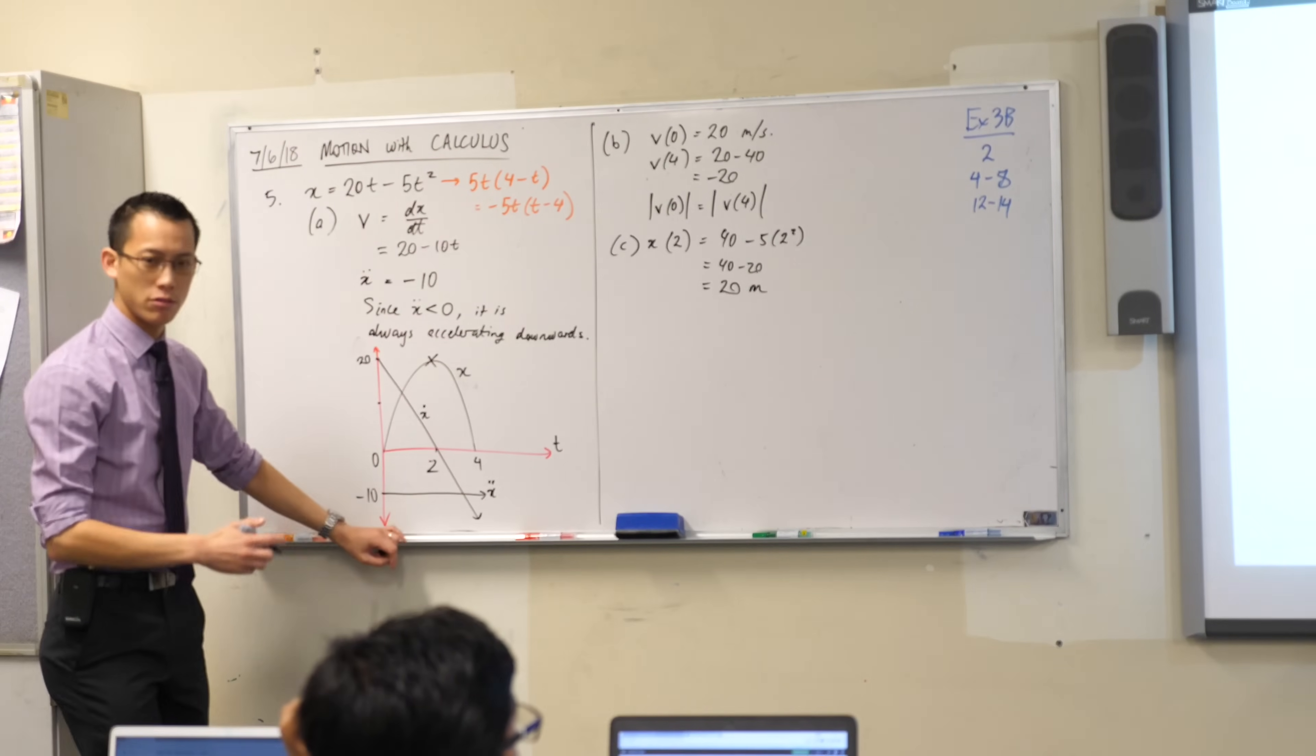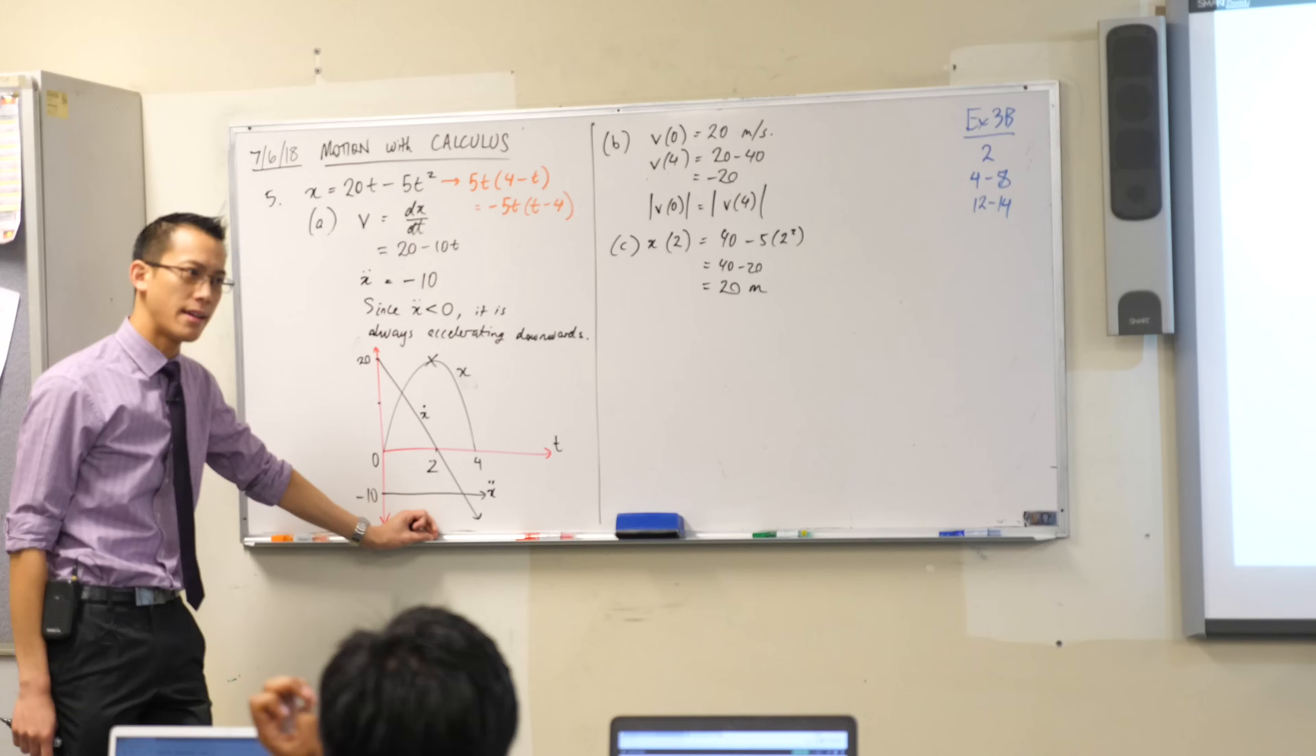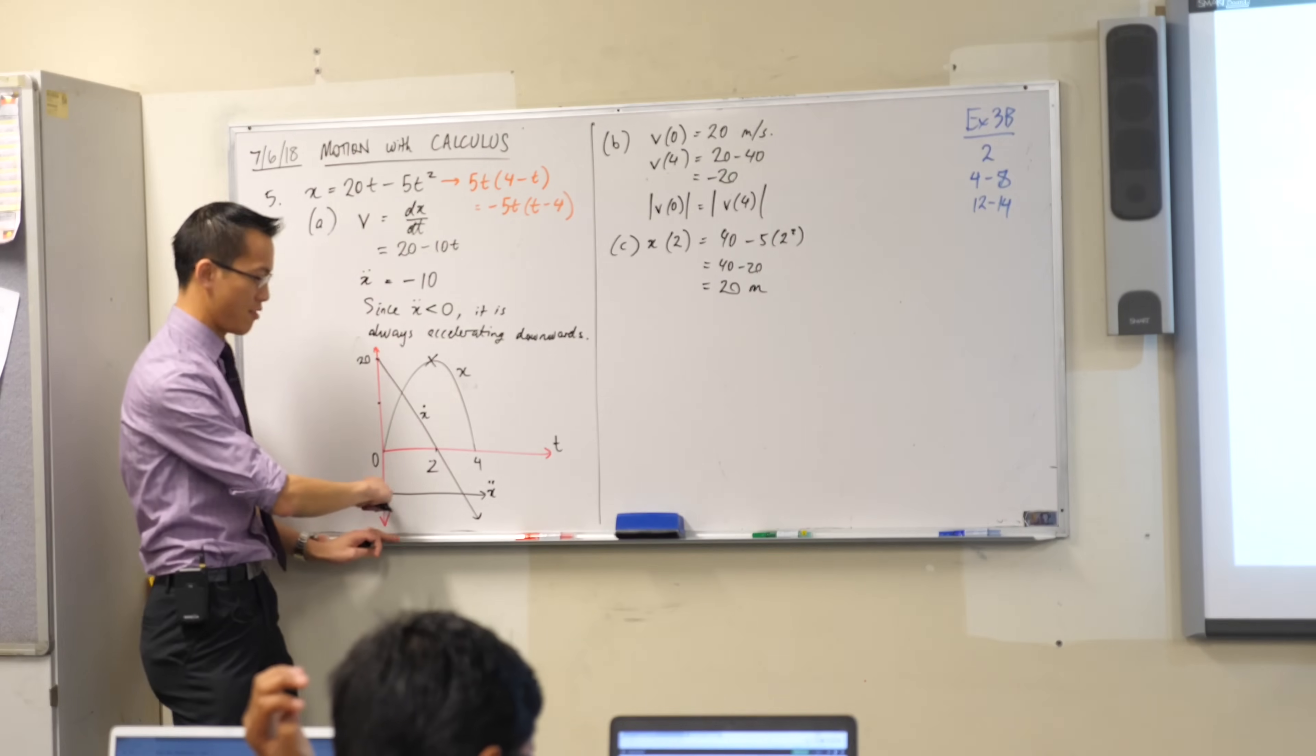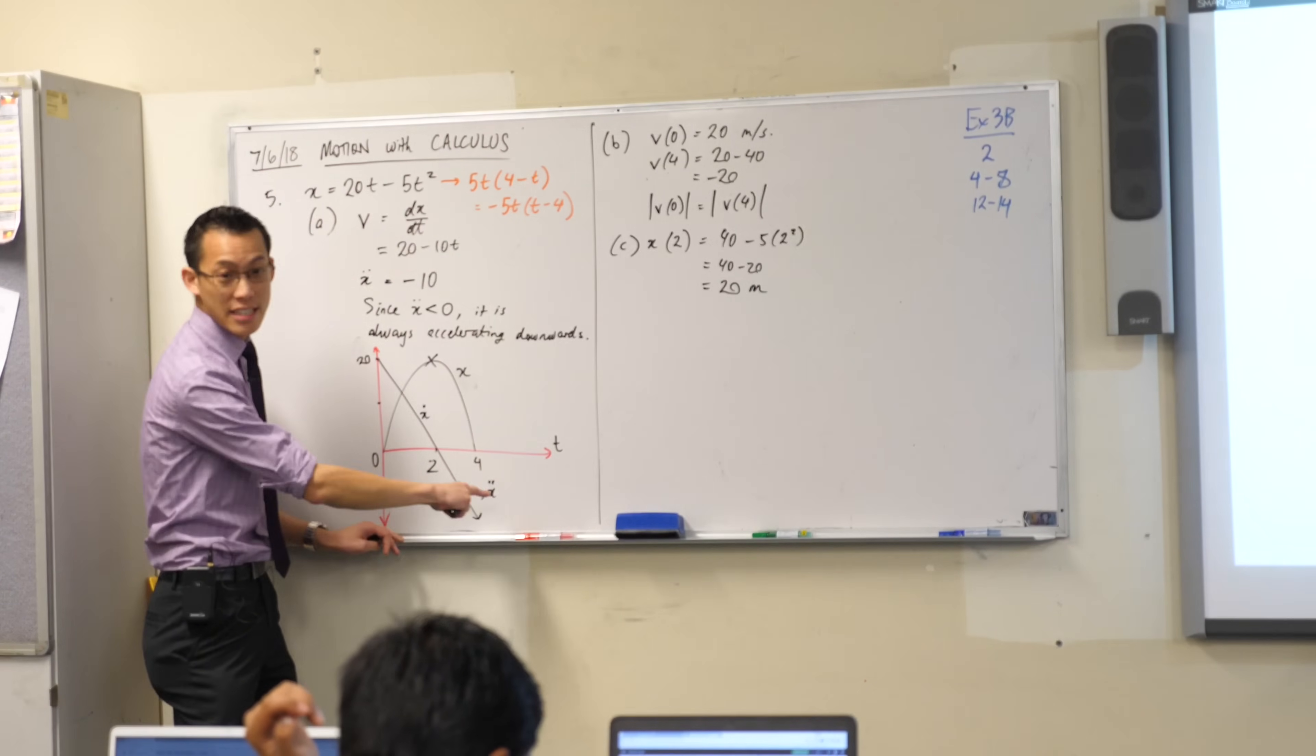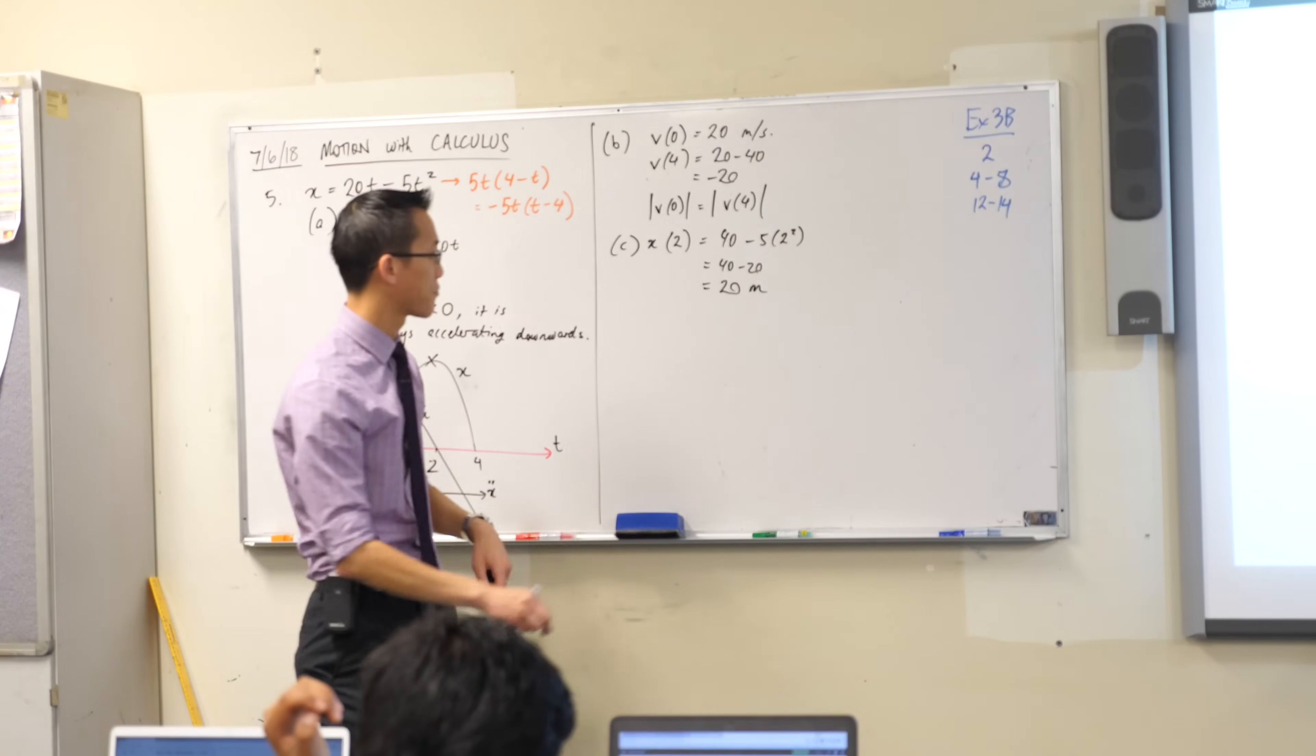Find the acceleration at the top of the flight. Well, have a look at your acceleration graph. What's acceleration doing? It doesn't change ever, it's constant, right? So it didn't matter whether you asked whether it was at the top of the flight or at the bottom or when it hits the ground, the acceleration is always negative 10 metres.